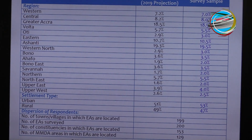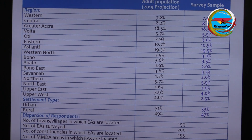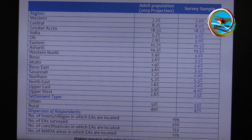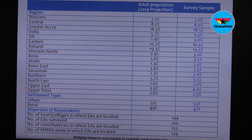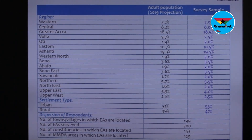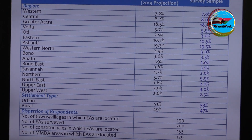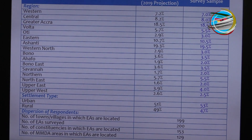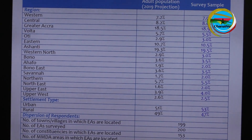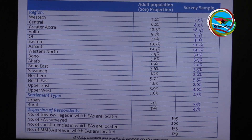Now to the demographics of the survey. I'd like you to focus on the section highlighted in blue — what we've called the adult population projection. That is the official census data for Ghana, and you can see that our sample closely mirrors that.